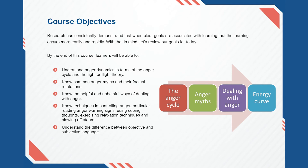By the end of this course, learners will be able to: understand anger dynamics in terms of the anger cycle and the fight or flight theory; know common anger myths and their factual refutations; know the helpful and unhelpful ways of dealing with anger; know techniques in controlling anger, particularly reading anger warning signs, using coping thoughts, exercising relaxation techniques, and blowing off steam; and understand the difference between objective and subjective language.